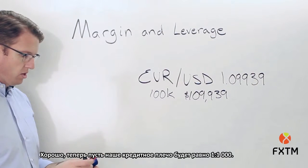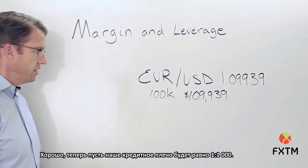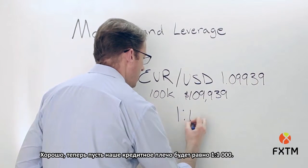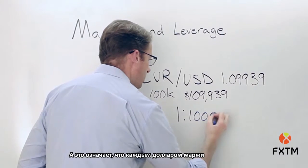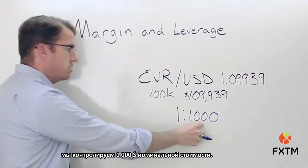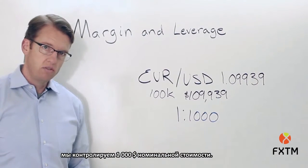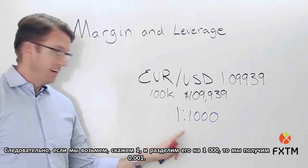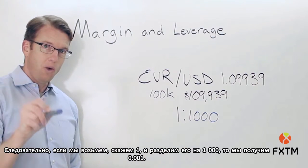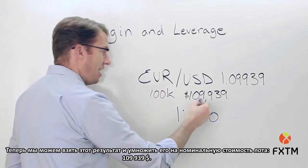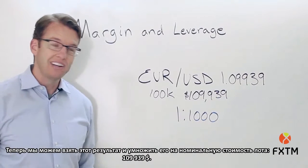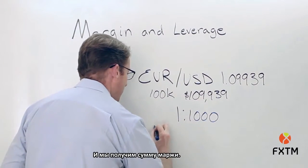If our leverage ratio is 1 to 1,000, that means that for each dollar of margin we're controlling $1,000 worth of notional value. So if we take 1 divided by 1,000, we get 0.001. We can then multiply that by the notional value of $109,939, and what we get is a margin amount.